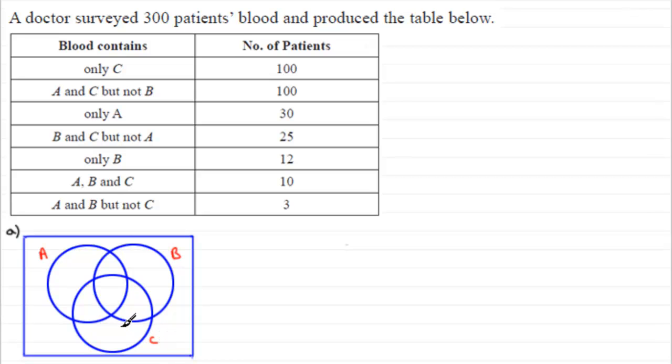We should be able to go down through the table now because there are 100 patients that have only substance C in their blood. So only substance C is going to be this region in here, so we'll mark in 100 for that one.